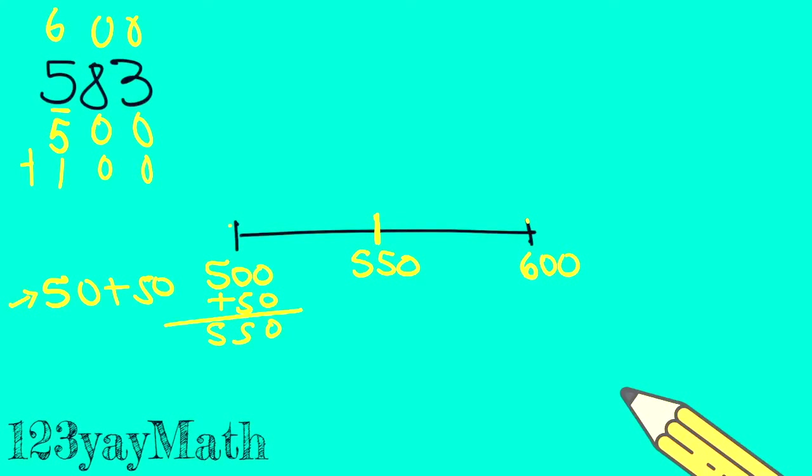There you go. Now it's time to place my number on the number line. So 550, 560, 570, 580. So 583 will be somewhere around here. 583. Is 583 closer to 600 or to 500? Of course, it's closer to 600.